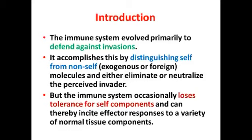This is accomplished by distinguishing self-antigen from non-self-antigen اللي هي تعتبر exogenous or foreign bodies and molecules. بهالحالة الرسوم سيكون either by elimination of the antigen or by neutralizing the perceived invader. لكن أحيانا بـ certain circumstances, certain conditions, certain disorders، الـ immune system occasionally loses its tolerance for the self-antigen, بالنتيجة رح يسبب an exaggerated response against the self-antigen وبنتيجة رح يسبب a variety of normal tissue destruction and injury.